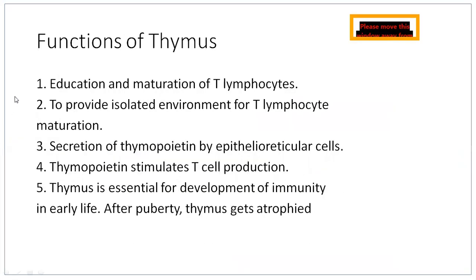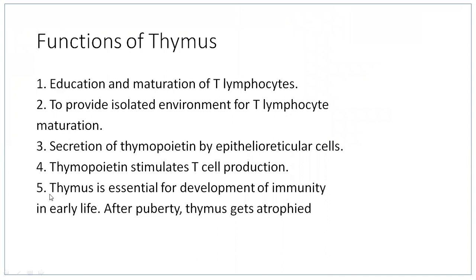Epithelioreticular cells form the supporting meshwork in the thymus; they are derived from the third pharyngeal pouch and are also called nurse cells, as they provide the required microenvironment for differentiation and maturation of T cells. There are six types of epithelioreticular cells, numbered types 1 through 6. Functions of the thymus include education and maturation of T lymphocytes, secretion of thymopoietin by type 4 epithelioreticular cells stimulating T cell production, and providing cell-mediated immunity that stays lifelong after puberty.